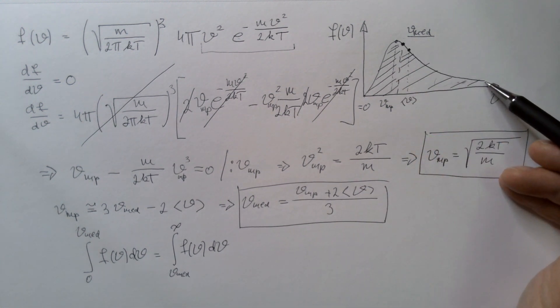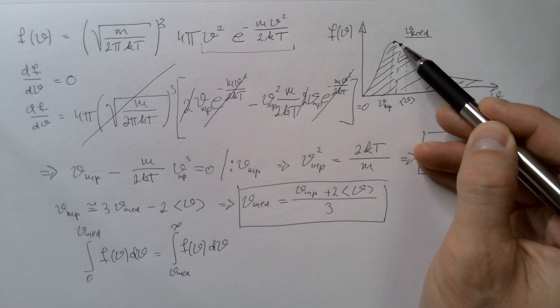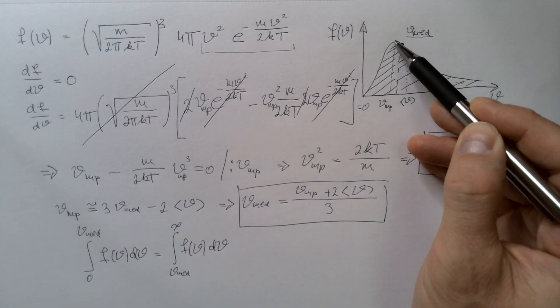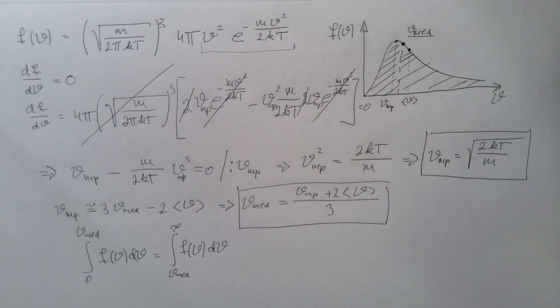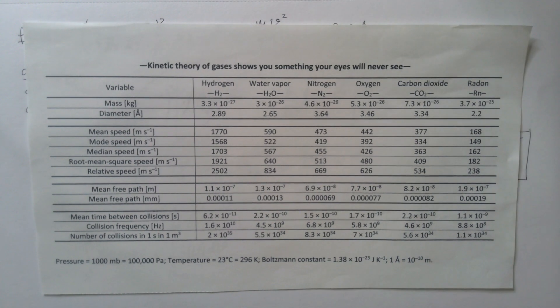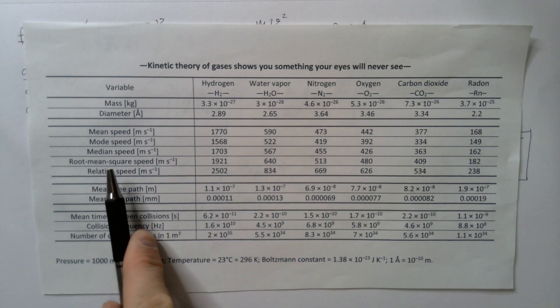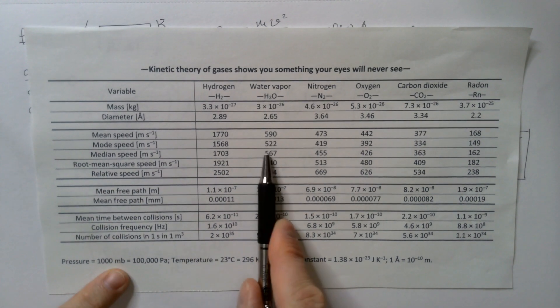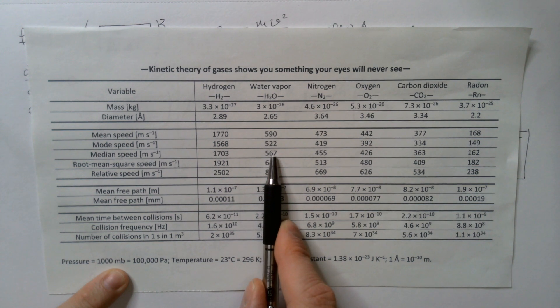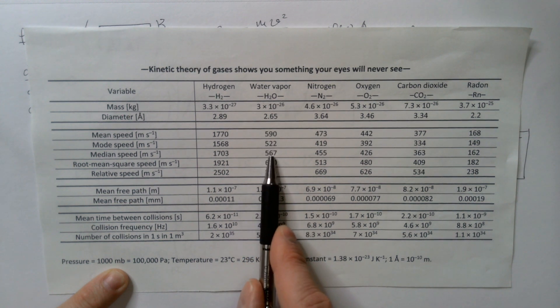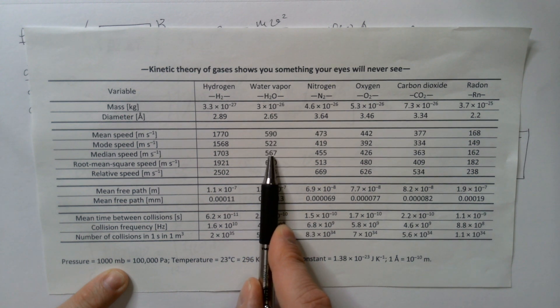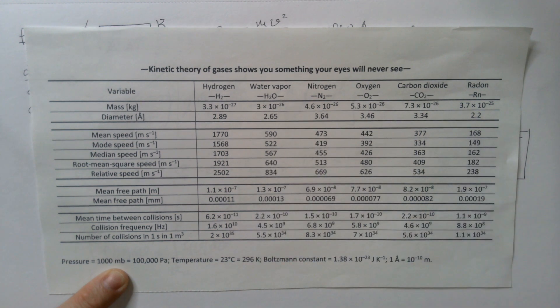In these positively skewed distributions, such as Maxwell-Boltzmann distribution, median speed always sits between most probable speed and the mean speed in the gas. If we go back to our table, you will indeed see that median speed, for example, of water vapor, sits right between mode speed that is below median speed and mean speed that is higher than median speed, and you can observe the same pattern for other gases.